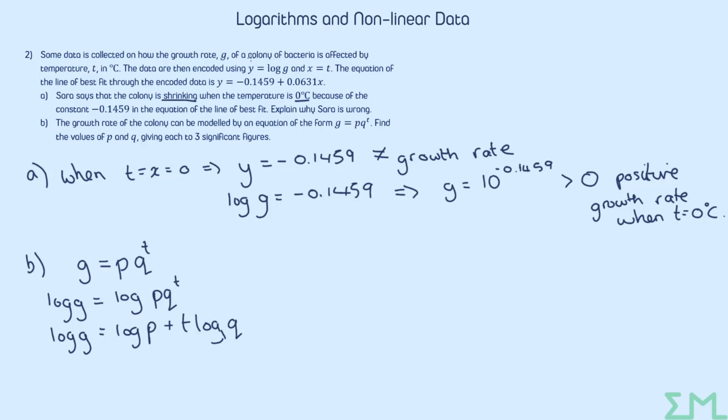So making the comparisons again. This is comparing it back up to this equation up here. Let's start with the gradient number in front of X. Which here would be the number in front of T because X equals T. So this means we can write that log Q is 0.0631. Therefore Q is 10 to the 0.0631. Which is 1.16 to three significant figures. Make sure you pay attention to the question and what level of accuracy they are asking for.